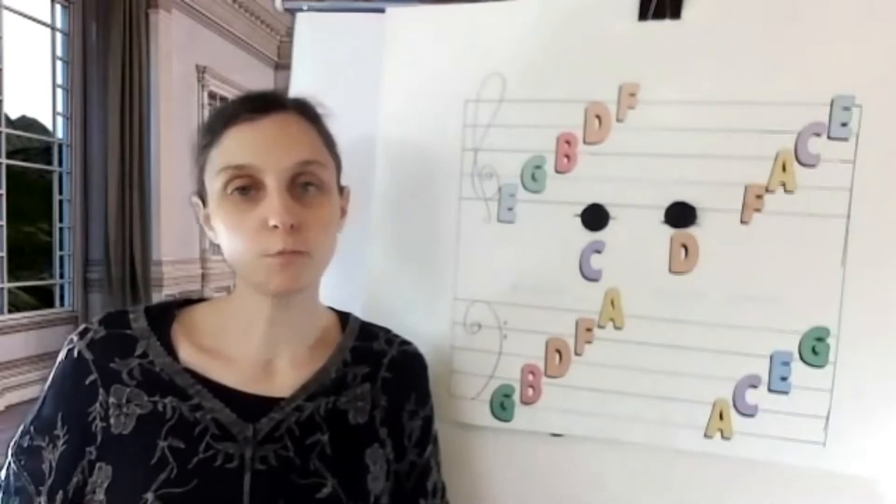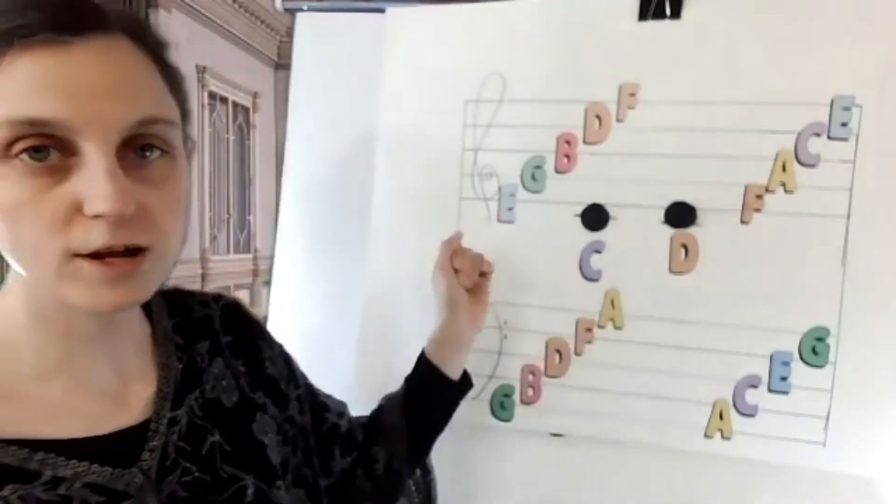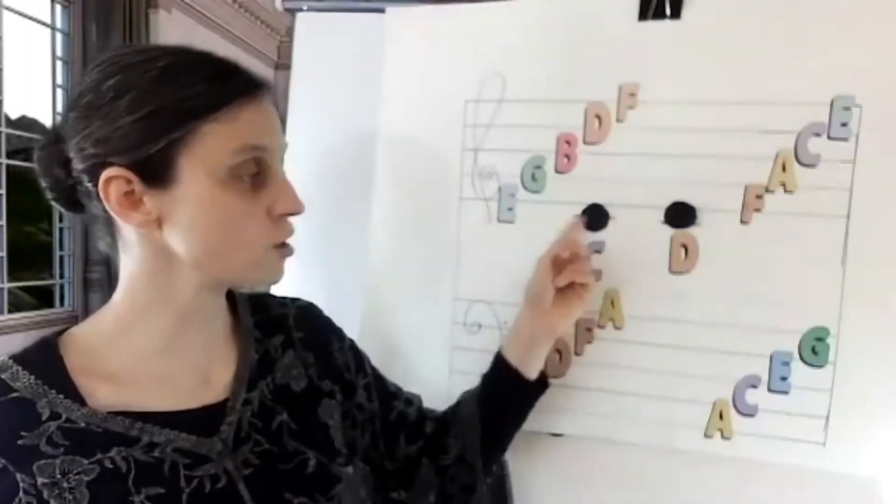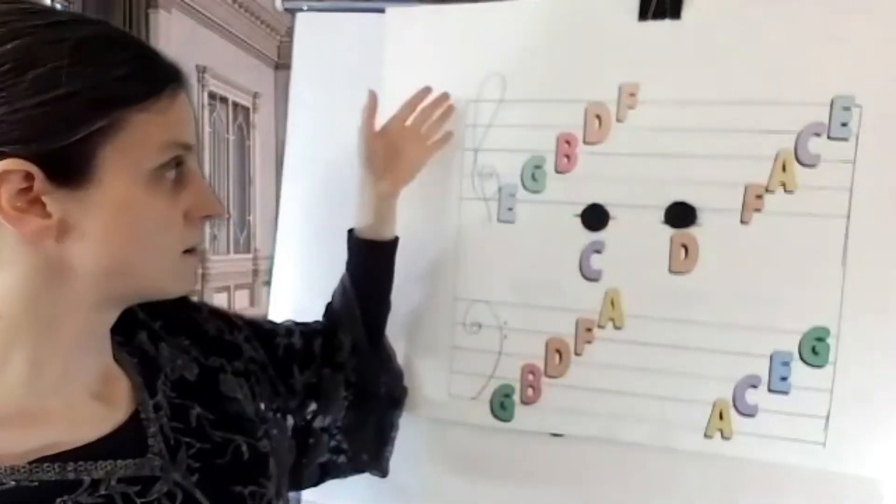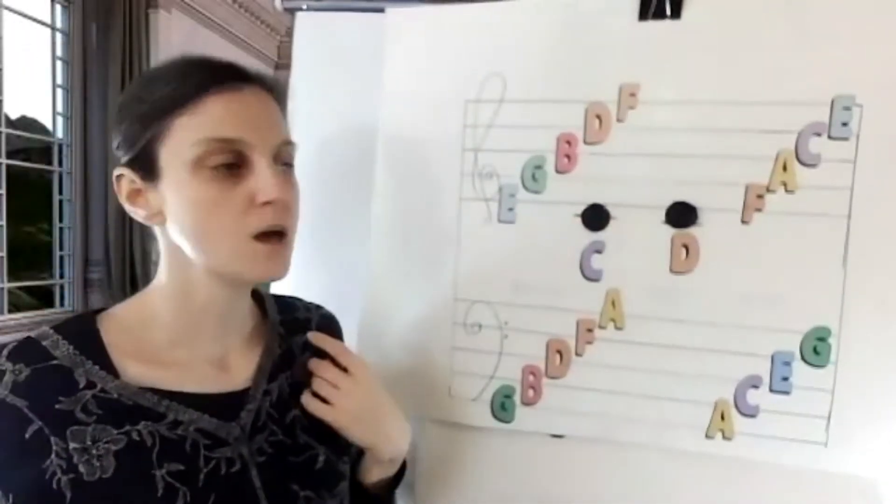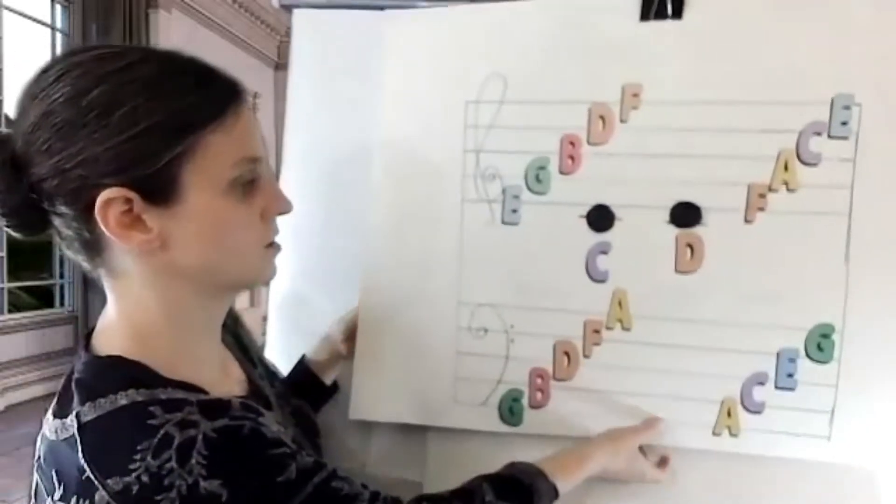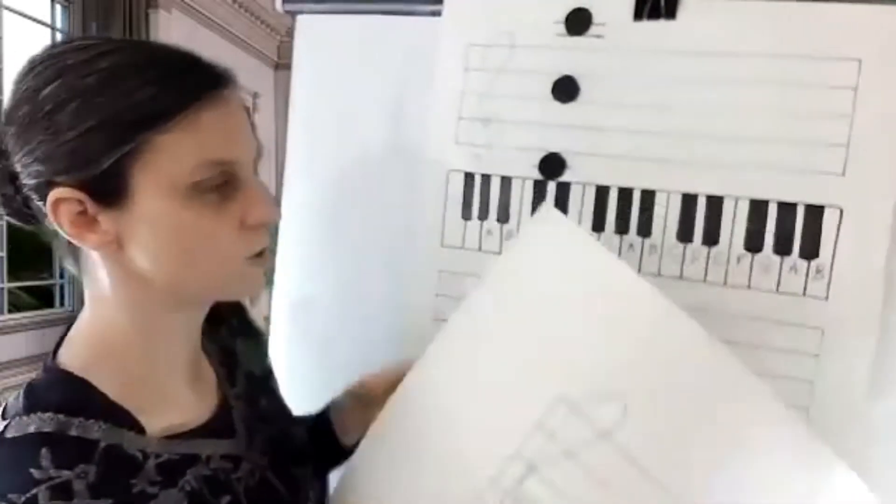So we already know where middle C is. Middle C is written on the ledger line in between the treble staff and the bass staff.